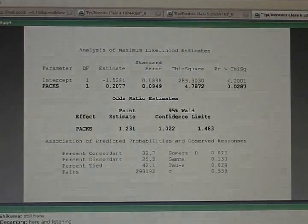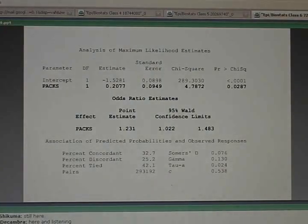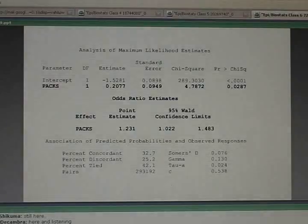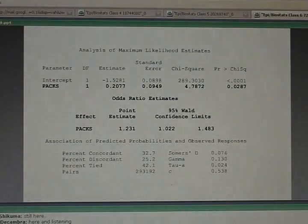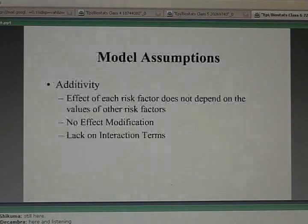If the assumption of a linear relationship is true, you come up with one odds ratio, which is assumed to be the common odds ratio for comparing any two smoking categories which are one unit apart. One pack-a-day versus non-smokers, 2 versus 1, or 3 versus 2. So keeping that in mind, what this model is assuming is what we call linearity.